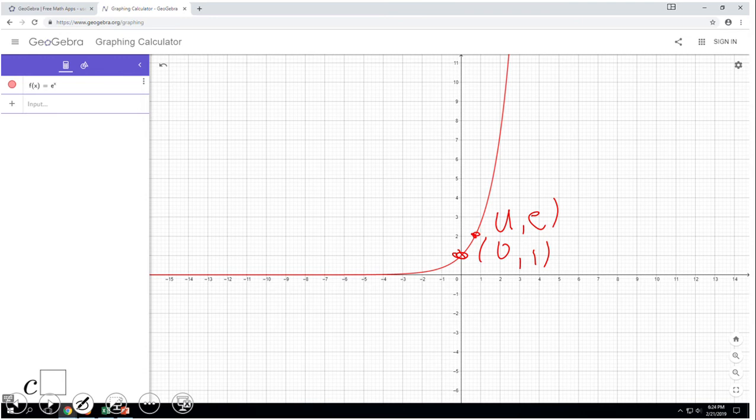Let me move this point here. This one is (2,e^2), with e being 2.71 if you remember. And we can move here, and this one would be (-1, e^(-1)), which you can calculate with a calculator.